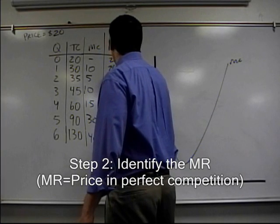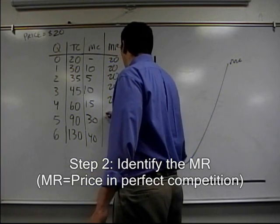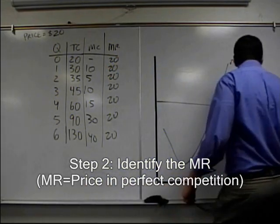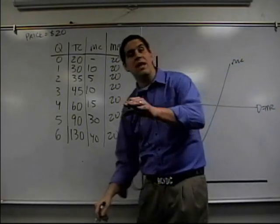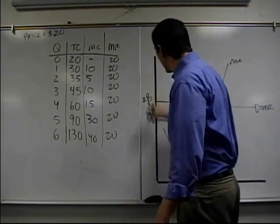So it's 20, 20, 20, 20, 20, 20, and 20. It's a whole long line. Demand equals the marginal revenue, which equals the price because this firm is a price taker. And the price we said is right there, 20.